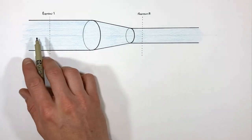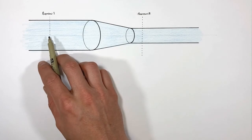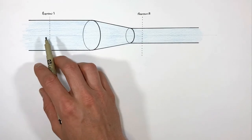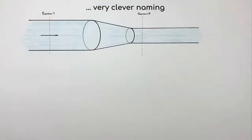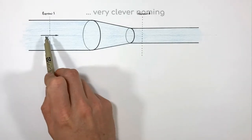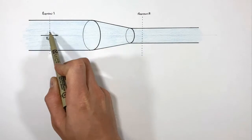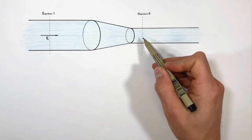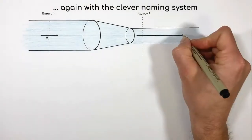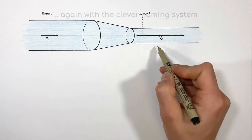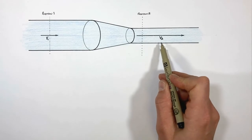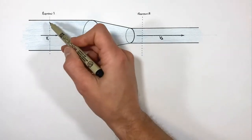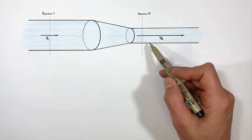The fluid as it passes position one has some certain velocity — let's call this velocity one. That is the forward velocity of the fluid as it passes position one in our pipe. When this fluid gets to position two, it's going to have some other velocity — we'll call that velocity two. Really all we're doing is trying to relate these two velocities to each other, and they are related through the cross-sectional areas of these pipes at the two positions.